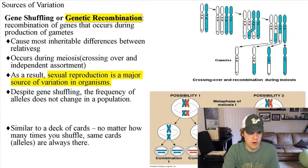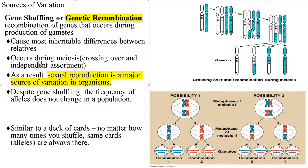Genetic recombination happens in sexual reproduction during meiosis. Crossing over — where alleles switch places — increases genetic diversity. Independent assortment also occurs when certain genes and alleles are not linked. Sexual reproduction is a major source of variation; you see this with siblings who have similarities but also differences. You get all your alleles from mom and dad, but you're not clones of them because sexual reproduction rearranges genes to create a different combination. The allele frequencies don't change, just the way they're combined.